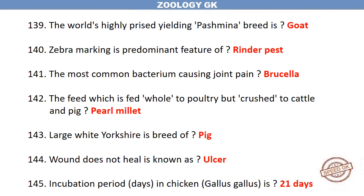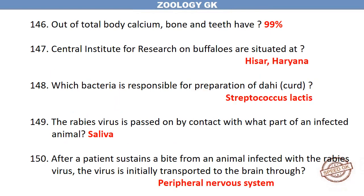Zebra marking is a predominant feature of rinderpest. The most common bacterium causing joint pain is Brucella. The feed given whole to poultry but crushed to cattle and pigs is pearl millet. Large White Yorkshire is a breed of pig. A wound that does not heal is known as an ulcer. The incubation period in chicken (Gallus gallus) is 21 days. Out of total body calcium, bones and teeth have 99%. The Central Institute for Research on Buffaloes is situated at Hisar, Haryana.